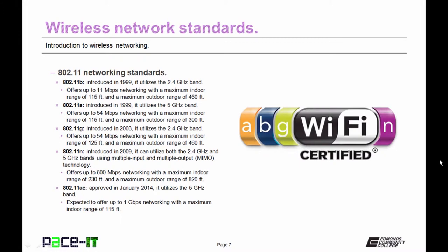As wireless became more popular, we needed techniques to increase speed. So along came 802.11n, introduced in 2009. It can utilize both the 2.4 and the 5 GHz bands by using multiple input and multiple output technology, MIMO technology. With MIMO, we use multiple antennas and multiple radio transmitters to increase throughput. It offers up to 600 megabits per second networking with a maximum indoor range of 230 feet and a maximum outdoor range of 820 feet.